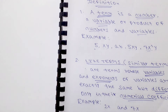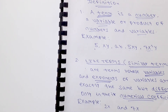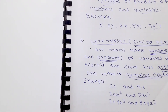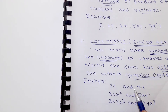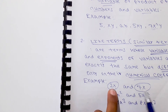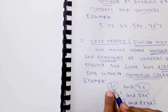So for like terms, the variables and exponents of the variables must be exactly the same, but the numerical coefficients can differ. For example, 2x and 7x are like terms — same variable x with the same exponent.